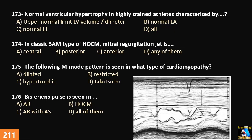Options for Question 175: dilated, hypertrophic, restrictive, or Takotsubo. Question 176: This variance pulse is seen in which of the following: AR (aortic regurgitation), aortic regurgitation with aortic stenosis, HOKUM, or all of them?